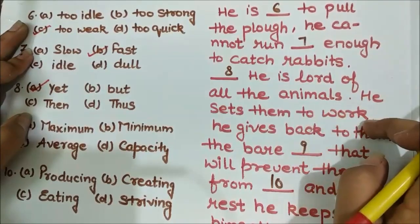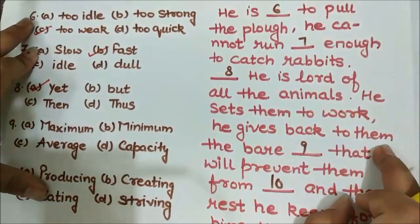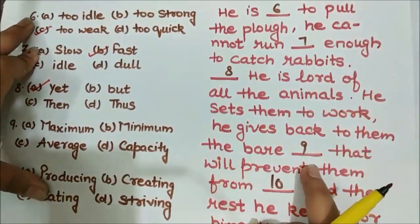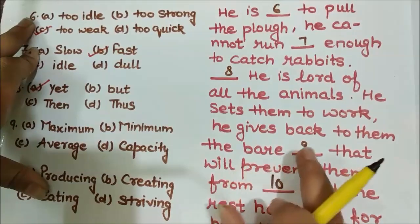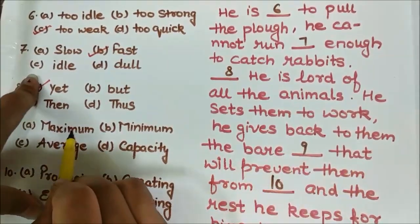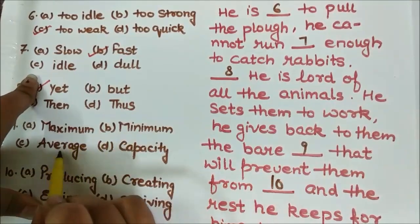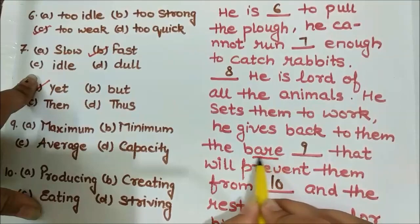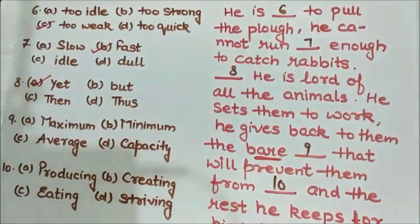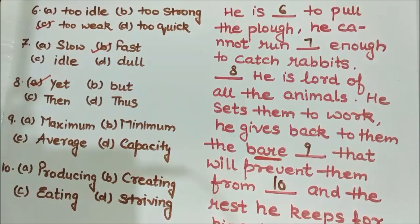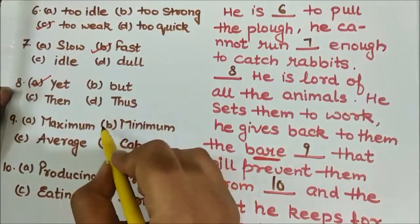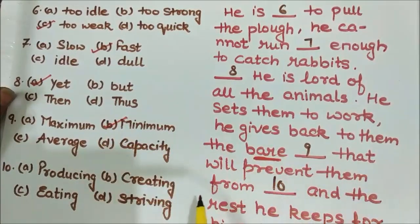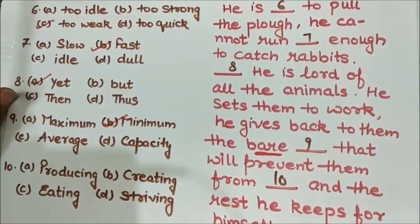The ninth blank: 'He gives back to them the bare ___ that will prevent them from ___.' The options are maximum, minimum, average, and capacity. 'Bare' means something given in a very small amount — just enough to survive, with difficulty. So the bare minimum that will prevent them from ___.